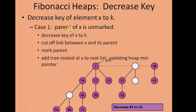Case 1: if the parent of x is unmarked and we decrease the key of x to some value k and the min-heap property is violated, then we cut off the link between x and its parent, mark the parent, and add the now-rooted x to the root list, updating the heap min pointer.